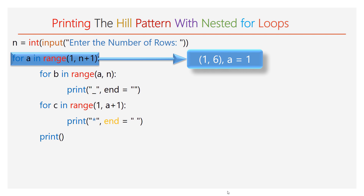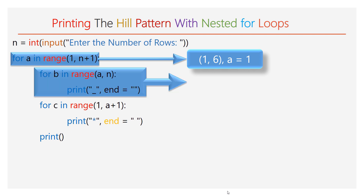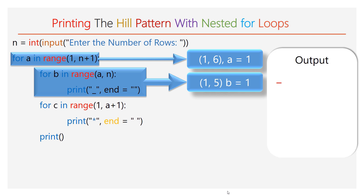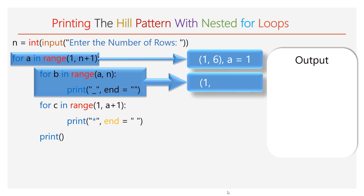The range of a will be 1 to 6. Initially the value of a will be 1. The execution will come to the first inner for loop, where the range of b is a to n, so the range of b will be 1 to 5. The value of b will be 1 and one space will be printed. The first inner for loop will iterate 4 times, adding one space per iteration, for a total of 4 spaces.